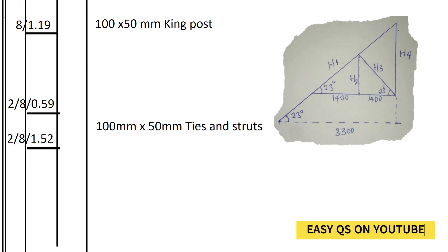King post: we had already calculated the length of the king post and we found that it's 1.19. How many king posts do we have? Each truss has a king post, which is eight trusses. Eight times 1.19, 100 by 50 millimeters king post.